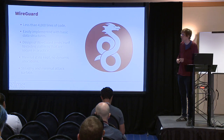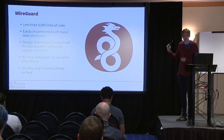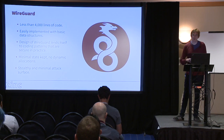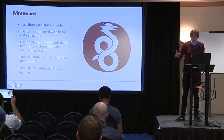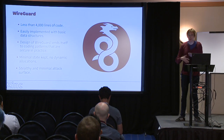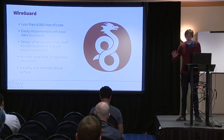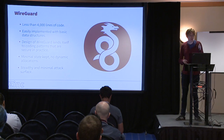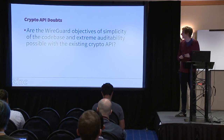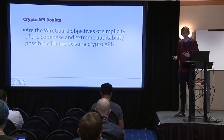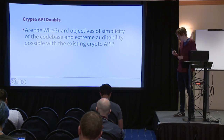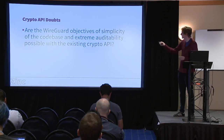WireGuard is supposed to be less than 4,000 lines of code, easily implemented with basic data structures and obvious clear coding patterns. We want minimal state, no dynamic memory allocations, a minimal attack surface. The question for the crypto is: can we achieve WireGuard's security and simplicity objectives using the current crypto API? I found it wasn't possible, which is why we have Zinc.